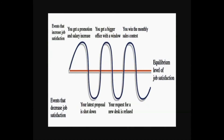The steady state diagram shows a level of equilibrium in job satisfaction. Events that increase job satisfaction — such as a promotion, salary increase, a bigger office with a window, or winning a monthly sales contest — make you happy. Events that decrease it — like a rejected proposal or a refused request — bring you down. But there is always an equilibrium status where you adjust yourself in terms of work values and job satisfaction.